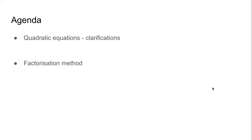These are the two things we will achieve today. One, we will look at some clarifications about quadratic equations that we studied in the last class. Second, we will start studying how to solve quadratic equations, beginning with the factorization method. We will need our textbooks, notebooks, pens, and pencils — pencils for the textbook and pens for the notebooks.